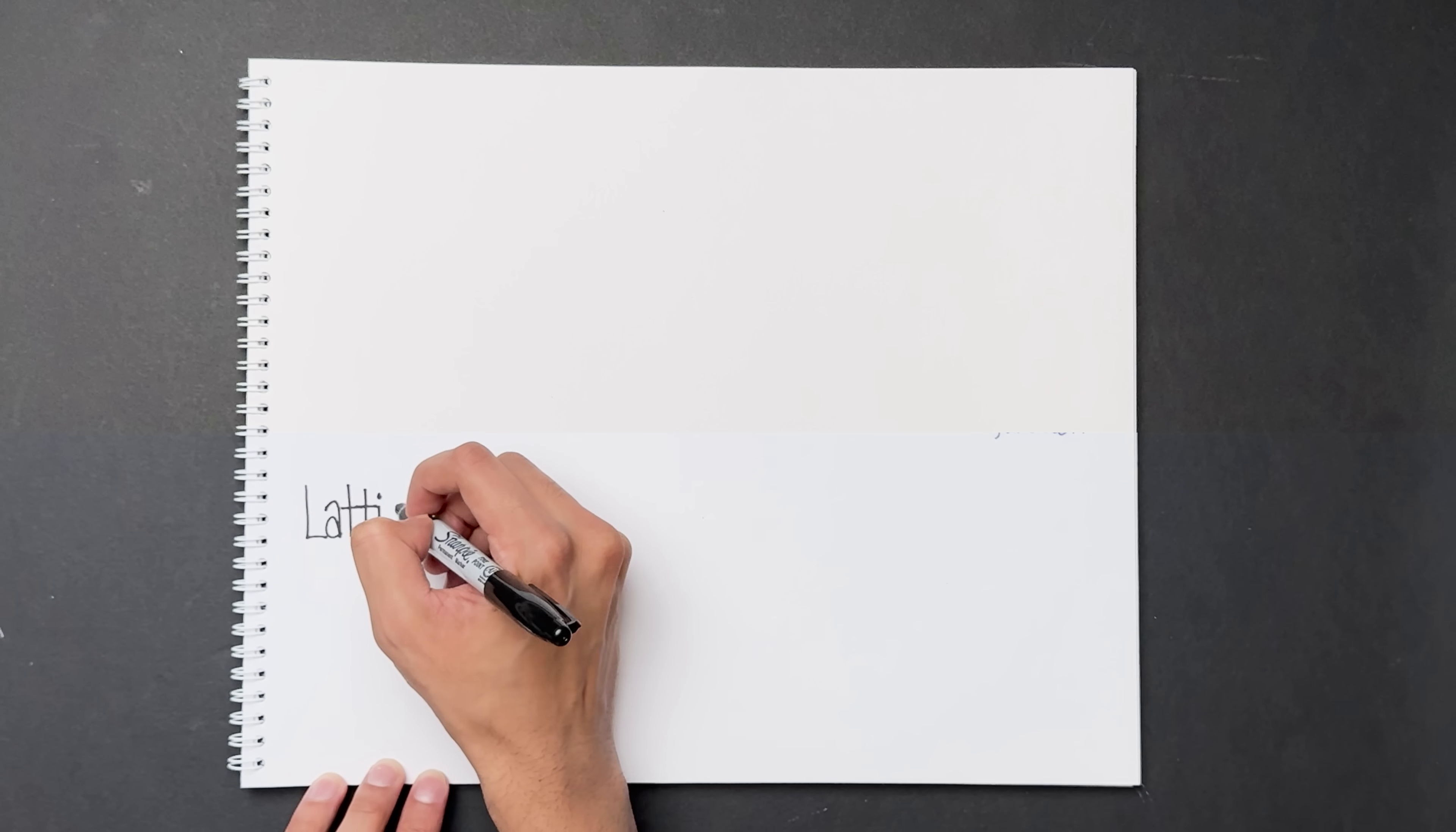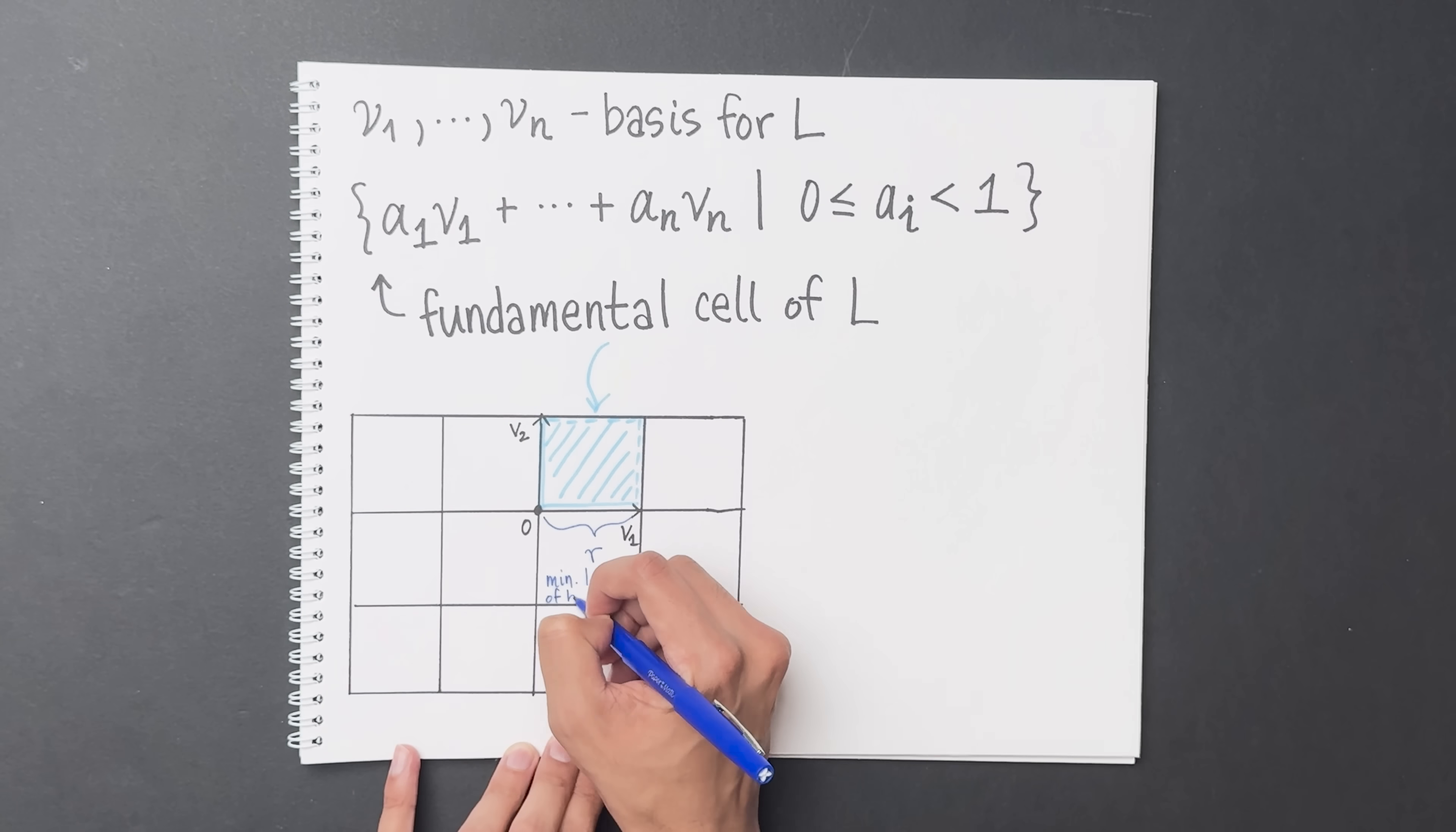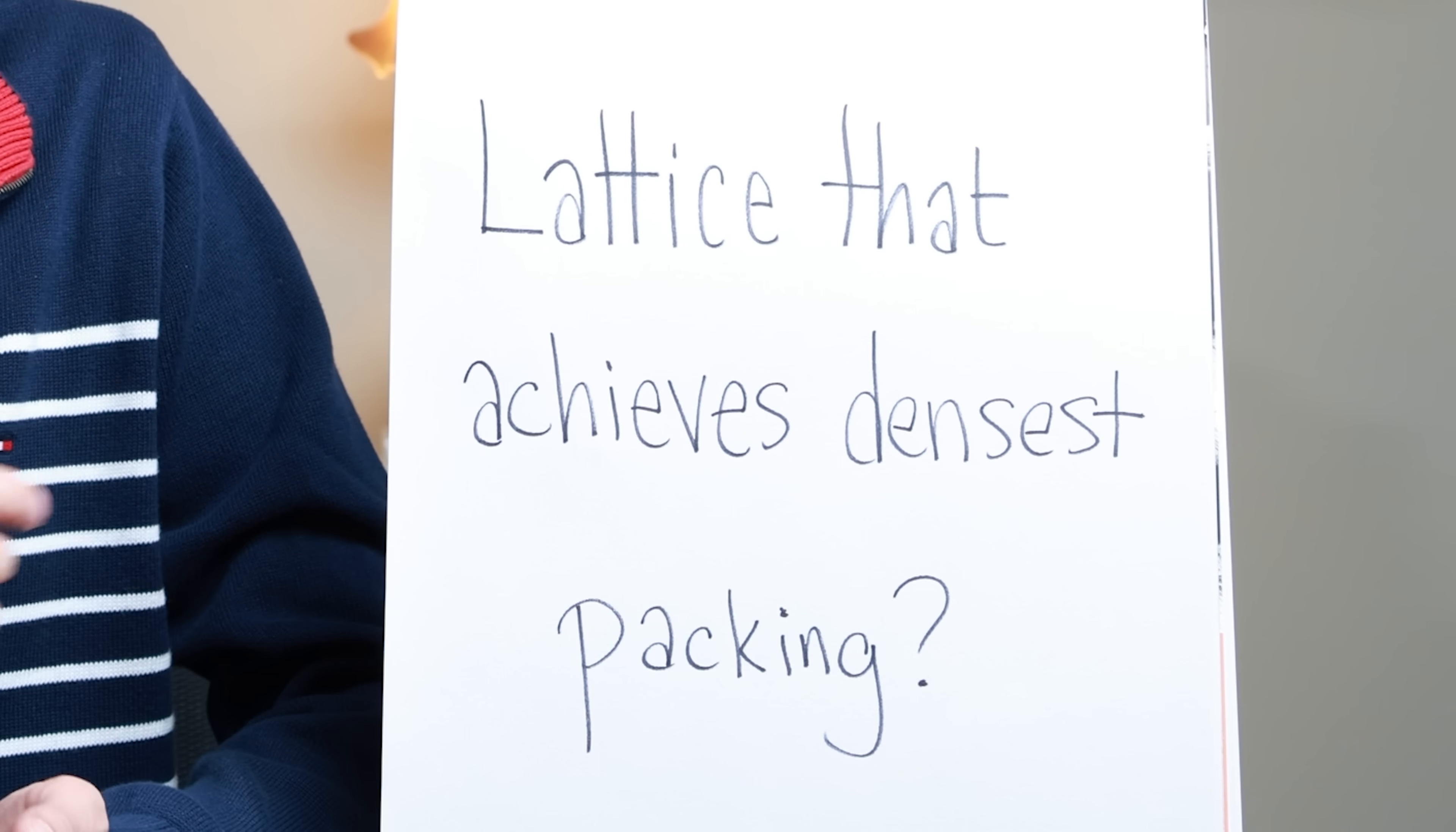This generalizes very cleanly to n dimensions. In general, a lattice in Rⁿ is the set of all integer linear combinations of v1 to vn. Here, v1 to vn are n linearly independent vectors. The fundamental cell of this lattice is the set of all linear combinations of these vectors where the coefficients are between 0 and 1. Just like in the 2D case, a lattice determines a sphere packing. I'm drawing a 2D image here because that's what we can visualize. And just like before, the density of this packing is defined to be the volume of the sphere of radius r over 2 divided by the volume of the fundamental cell. So here's the question we have to answer. Is there a lattice that achieves the densest sphere packing in Rⁿ?